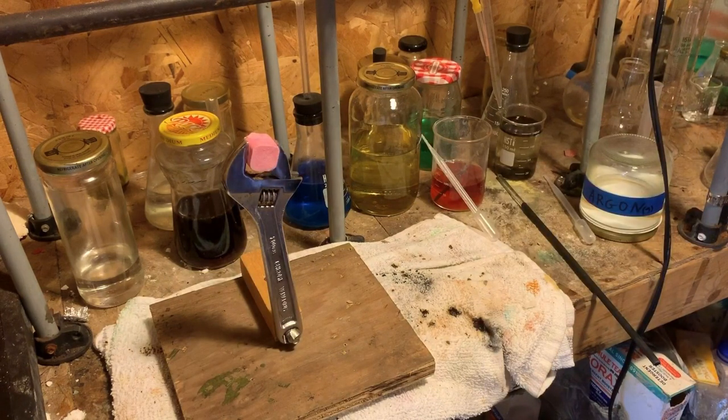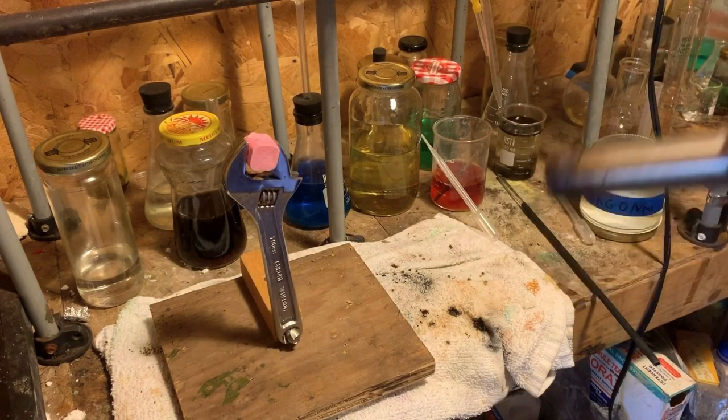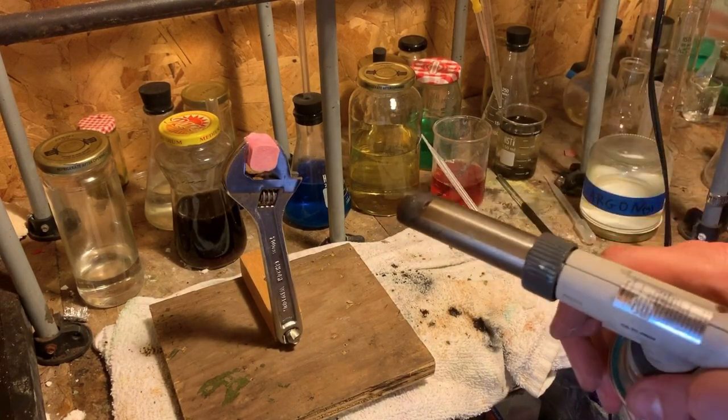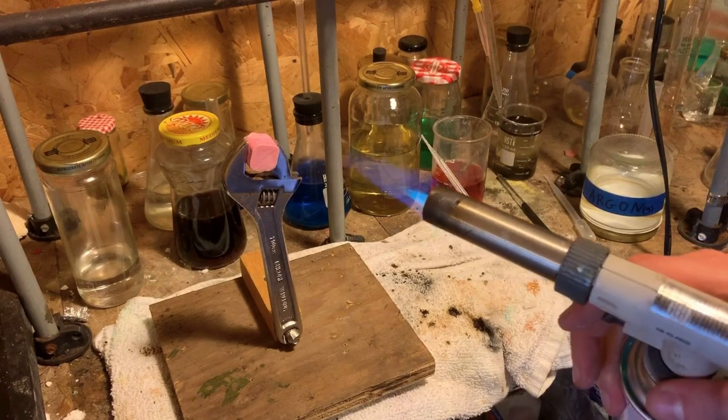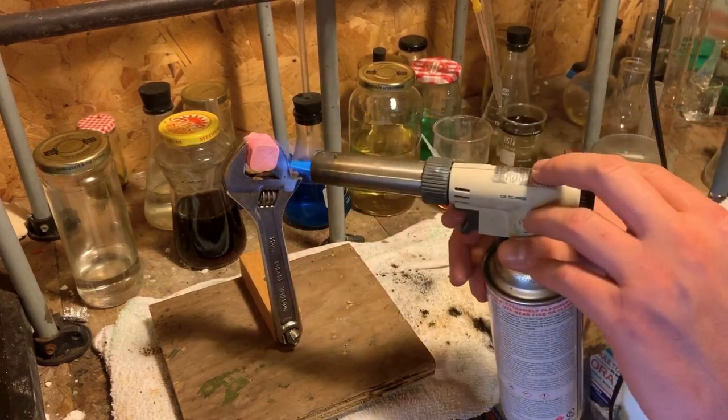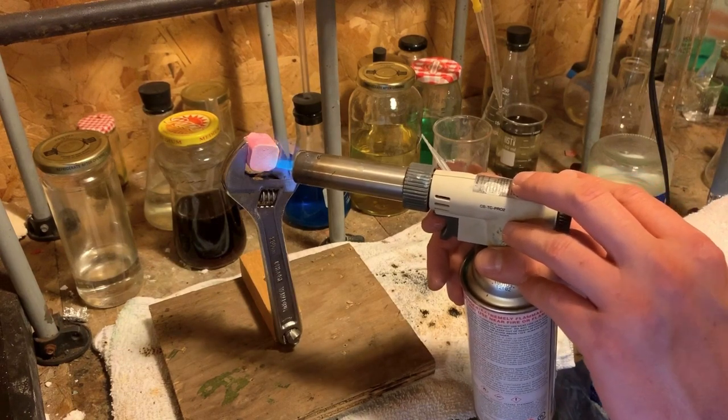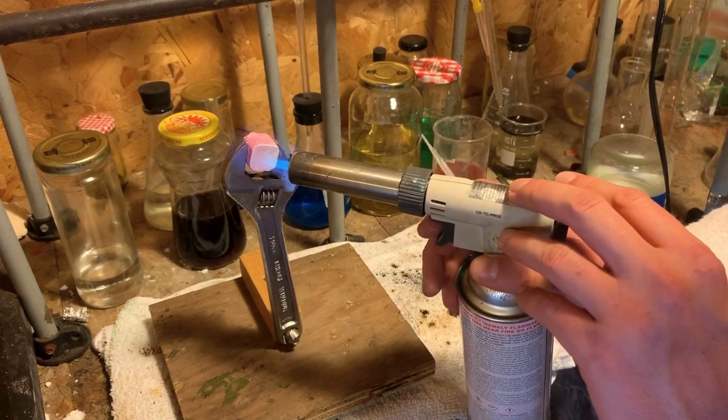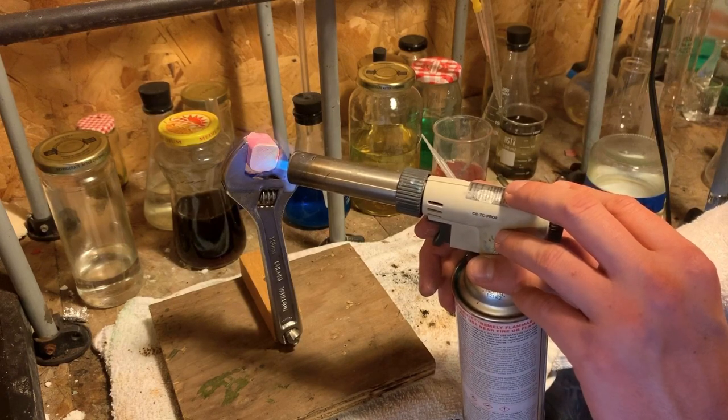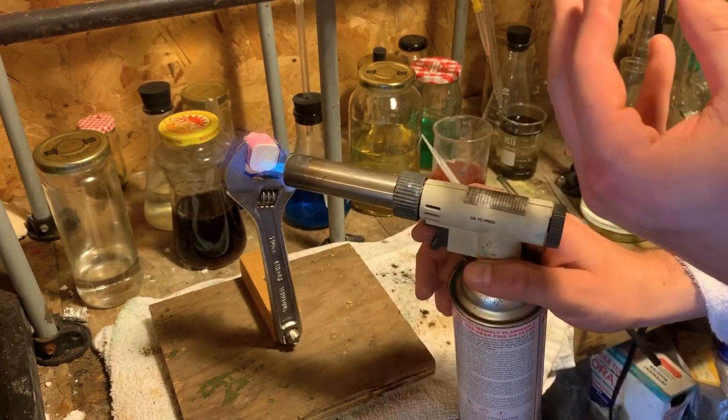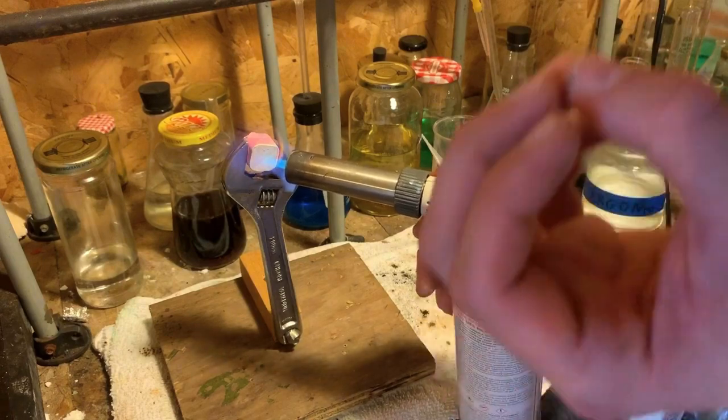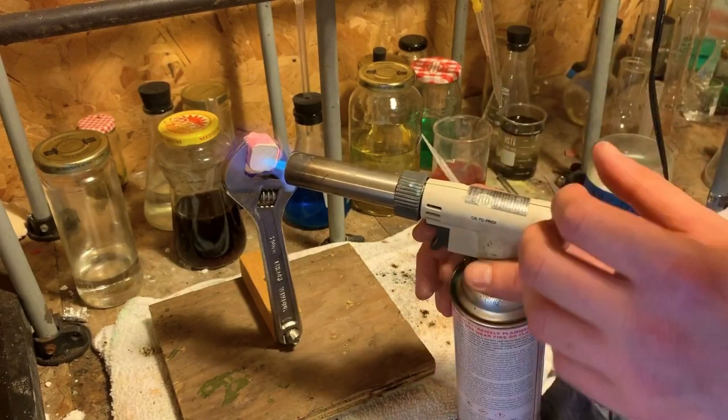You're going to see a color change take place here upon heating. This is going to turn white, and that indicates that the carbon dioxide gas is being liberated, thus in turn the calcium oxide is left behind.